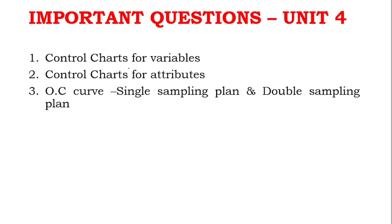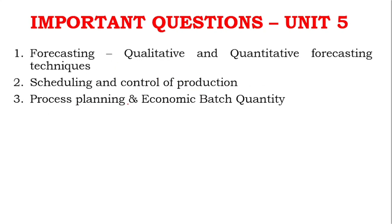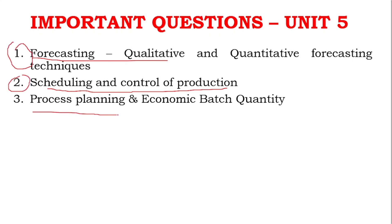For unit four, forecasting is very very important, and scheduling and control of production gives two confirmed questions. For unit five, process planning and economic batch quantity — economic batch quantity is very very important and worth 7 to 8 marks — are the key topics. These questions are confirmed for units four and five.